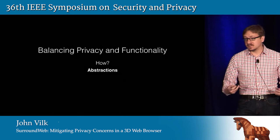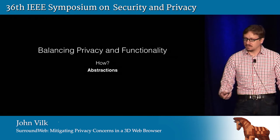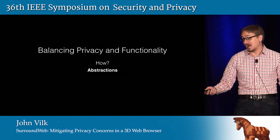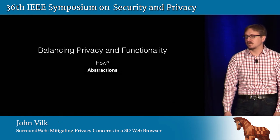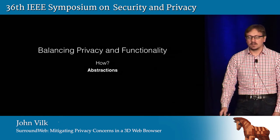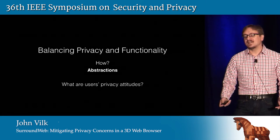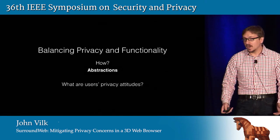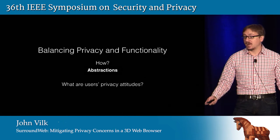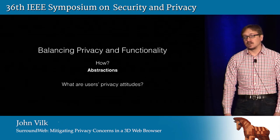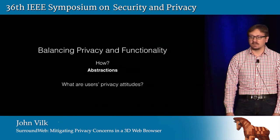So how can we give immersive web pages the ability to detect gestures and render content intelligently while maintaining some notion of user privacy? Our answer was a set of new abstractions, which we implemented in a 3D web browser called SurroundWeb. These abstractions are a core contribution of this work. But before we designed those, we had to answer a related question: what are users' privacy attitudes in this type of environment? We didn't know, so we turned to user surveys.